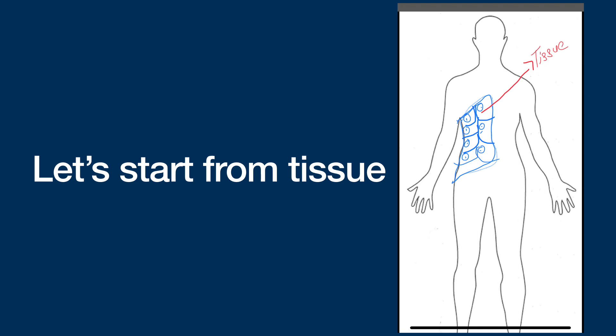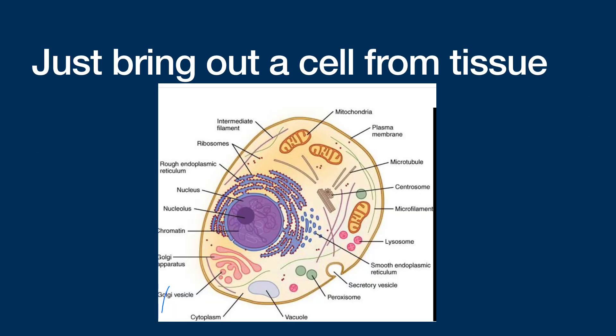This is the cell which is taken out from a tissue. Inside the cell you can see several structures like mitochondria, microtubules, intermediate filaments, ribosomes, etc. But for today's topic, just focus on the nucleus. Let's bring out the nucleus from that cell.